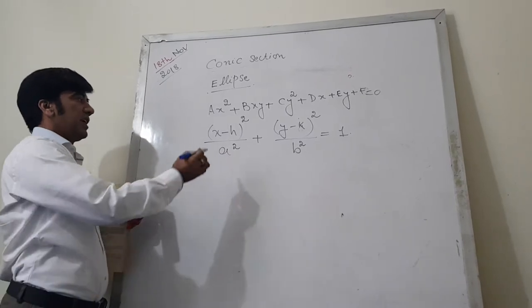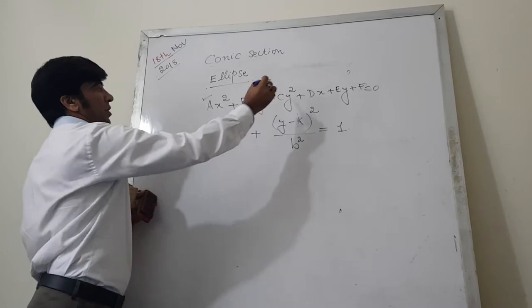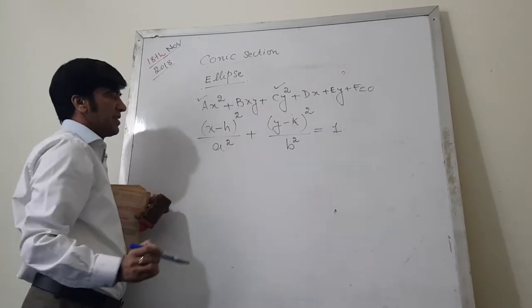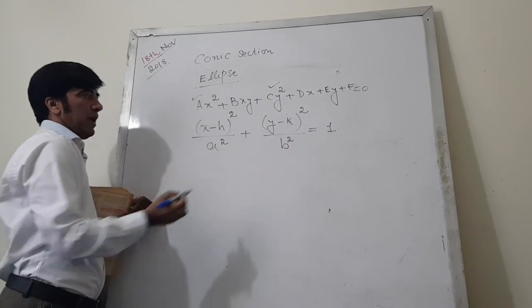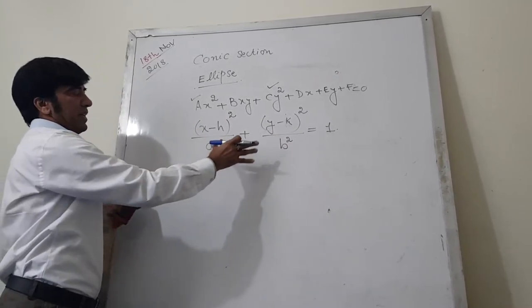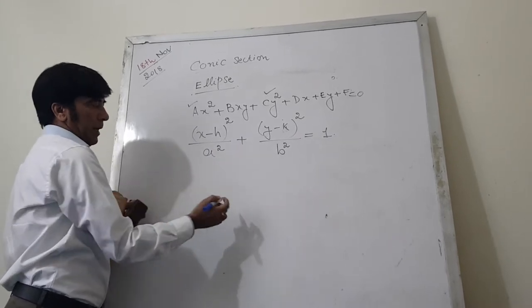If you get the equation in this form where a and c both exist, then we get the equation in this form and there is plus. If we have exactly something like that, this will represent the ellipse.